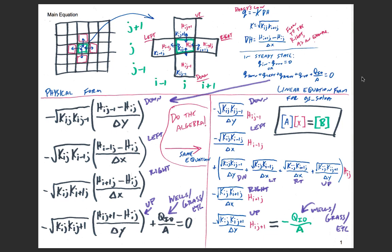We want the k value right at the boundary between the two grid squares where we're measuring the flow. We determine that k value as a geometric mean — not the arithmetic mean — between the two k values on either side. For example, working with the grid square to the right at k(i+1,j): we take the product of k(i,j) multiplied by k(i+1,j), take its square root, and that gives us the k value at the boundary. The hydraulic gradient is the difference in head values, h(i+1,j) minus h(i,j), divided by delta x — a forward finite difference approximation.